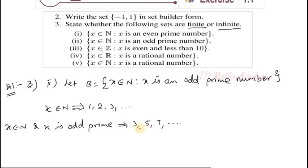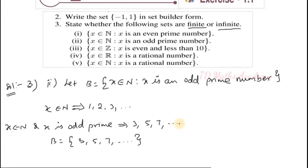This is an important concept. All other prime numbers are odd numbers. So the set goes to infinite. Therefore, B is an infinite set.